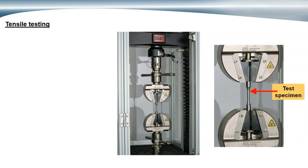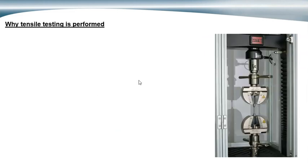Here is a tensile tester. Tensile testing is used to measure the tensile properties of metals and other materials, also plastics. This shows a sample being held between the two grips of a tensile tester, and here's a close-up of the sample in the two grips.